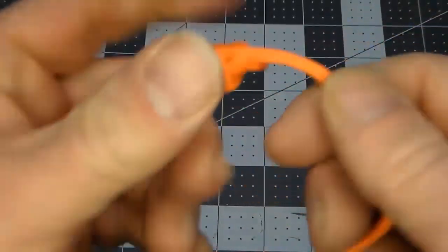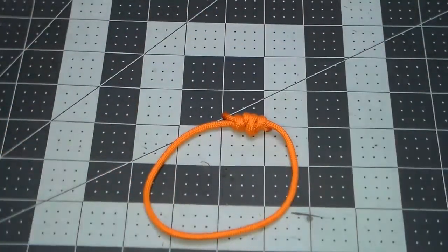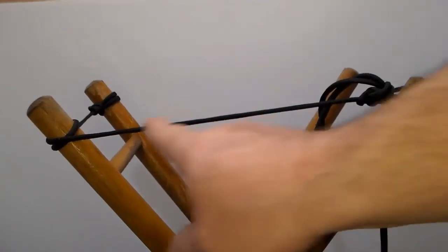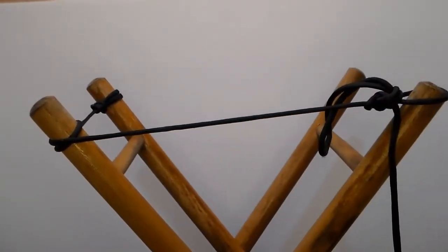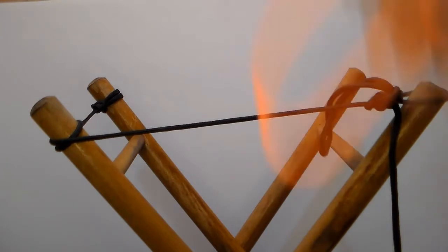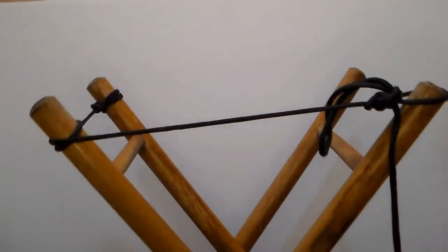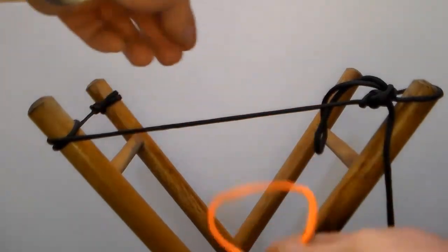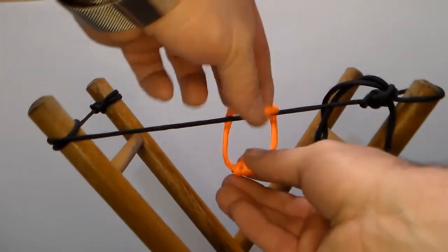Then to use our prusik loop, we have kind of a little mini ridge line here that I improvised real quick. This could also be a standing line, i.e., vertical, if you were climbing or doing something like that. Here we have our prusik loop.